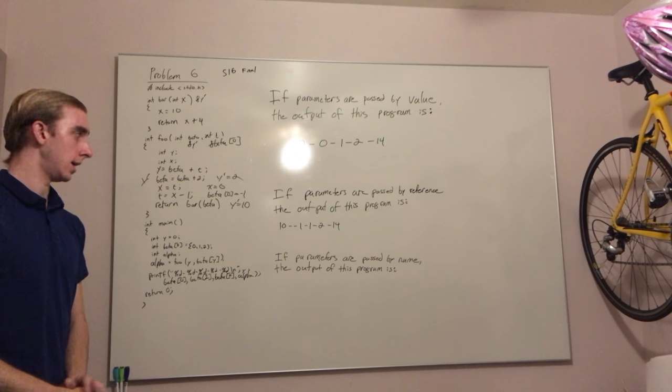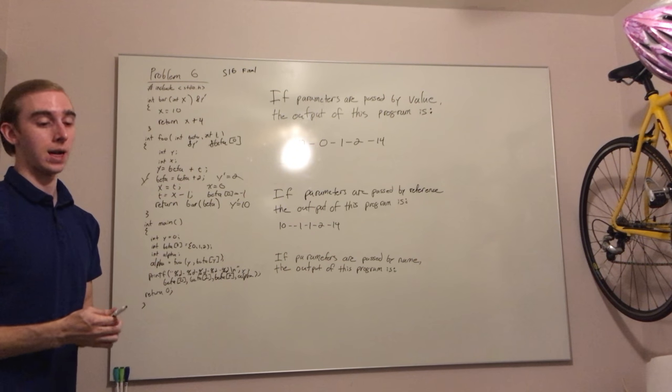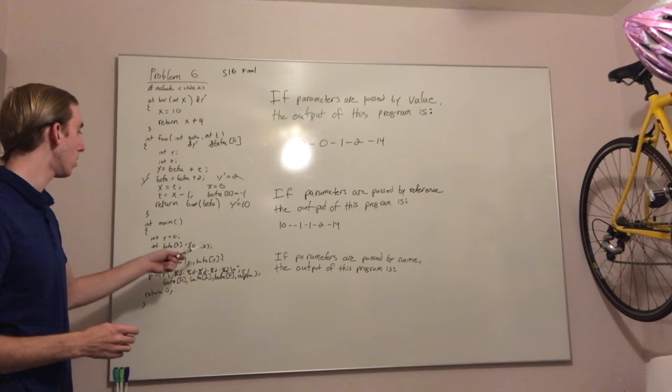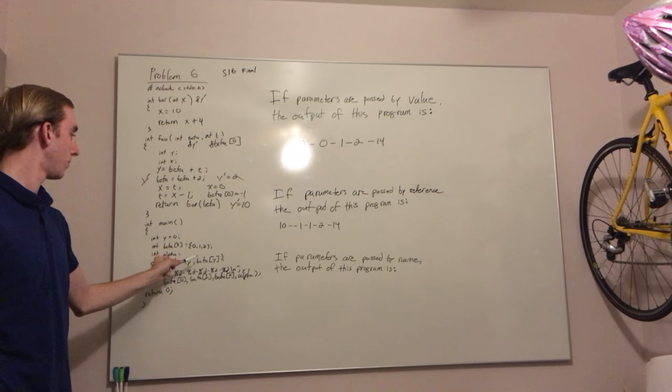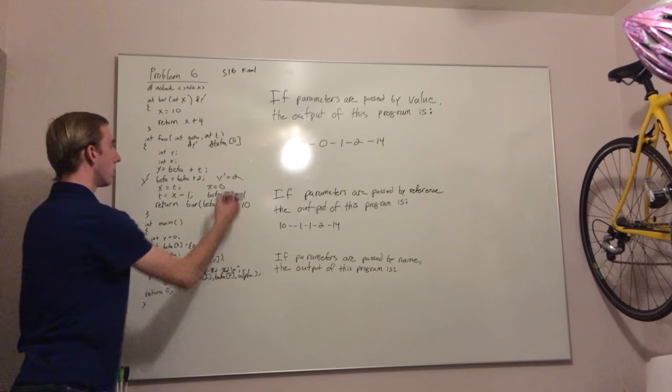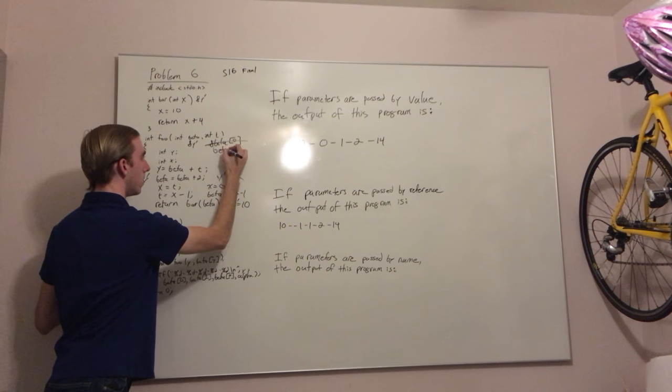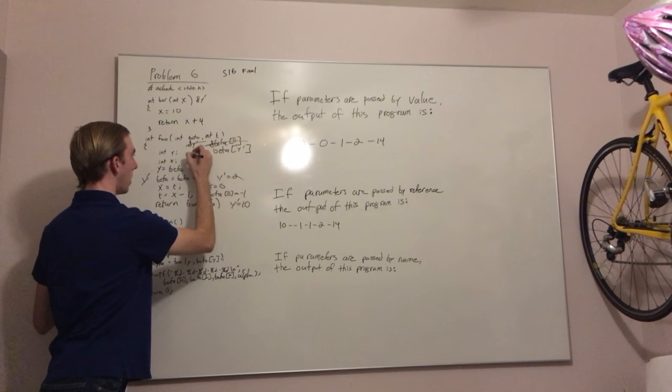The final case is passed by name, which is slightly different from passed by reference because whenever we invoke a parameter, we are now invoking the name that was originally passed. So in this case, this is no longer beta 0. This is now beta of y prime, and this is y prime.